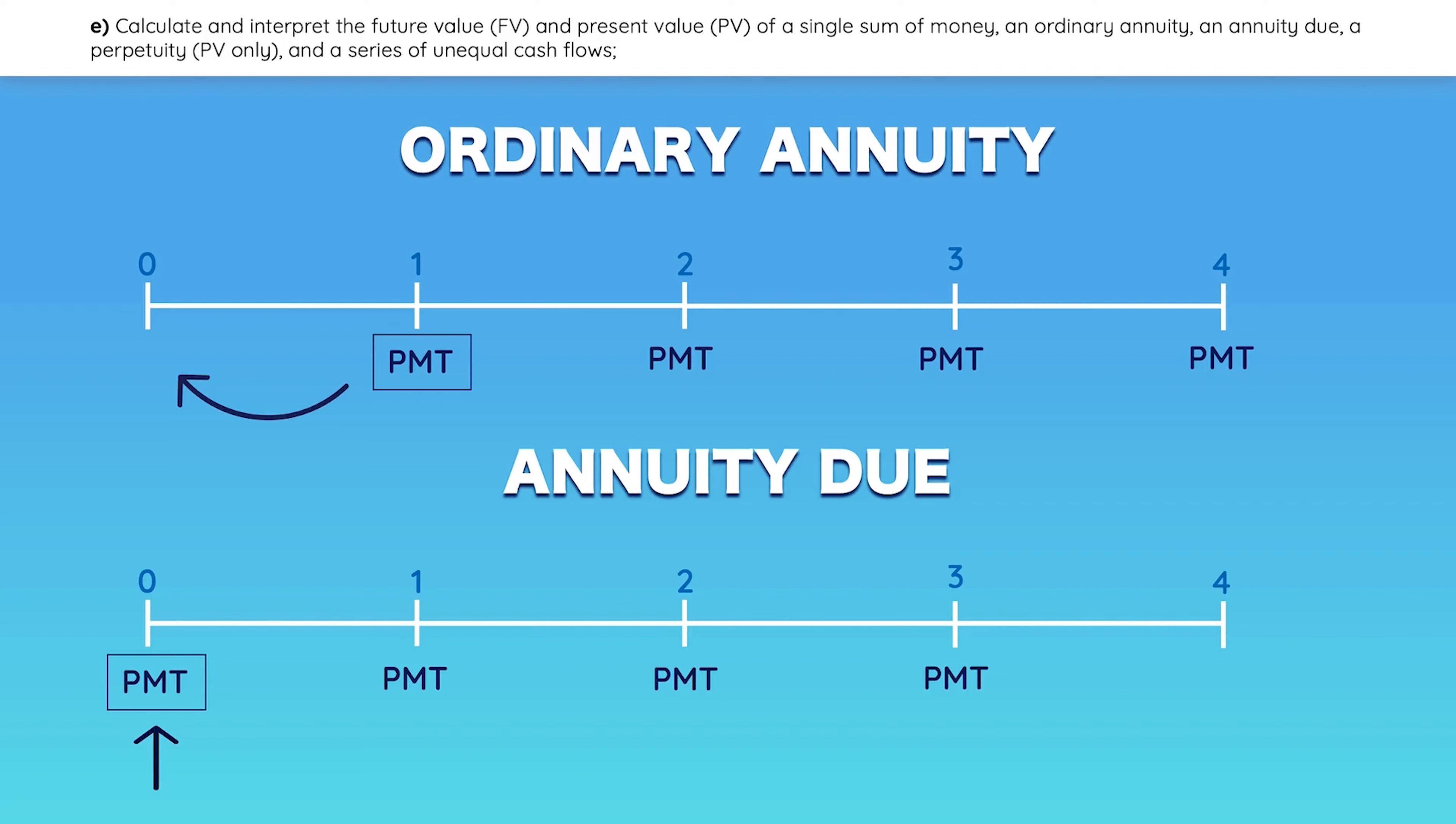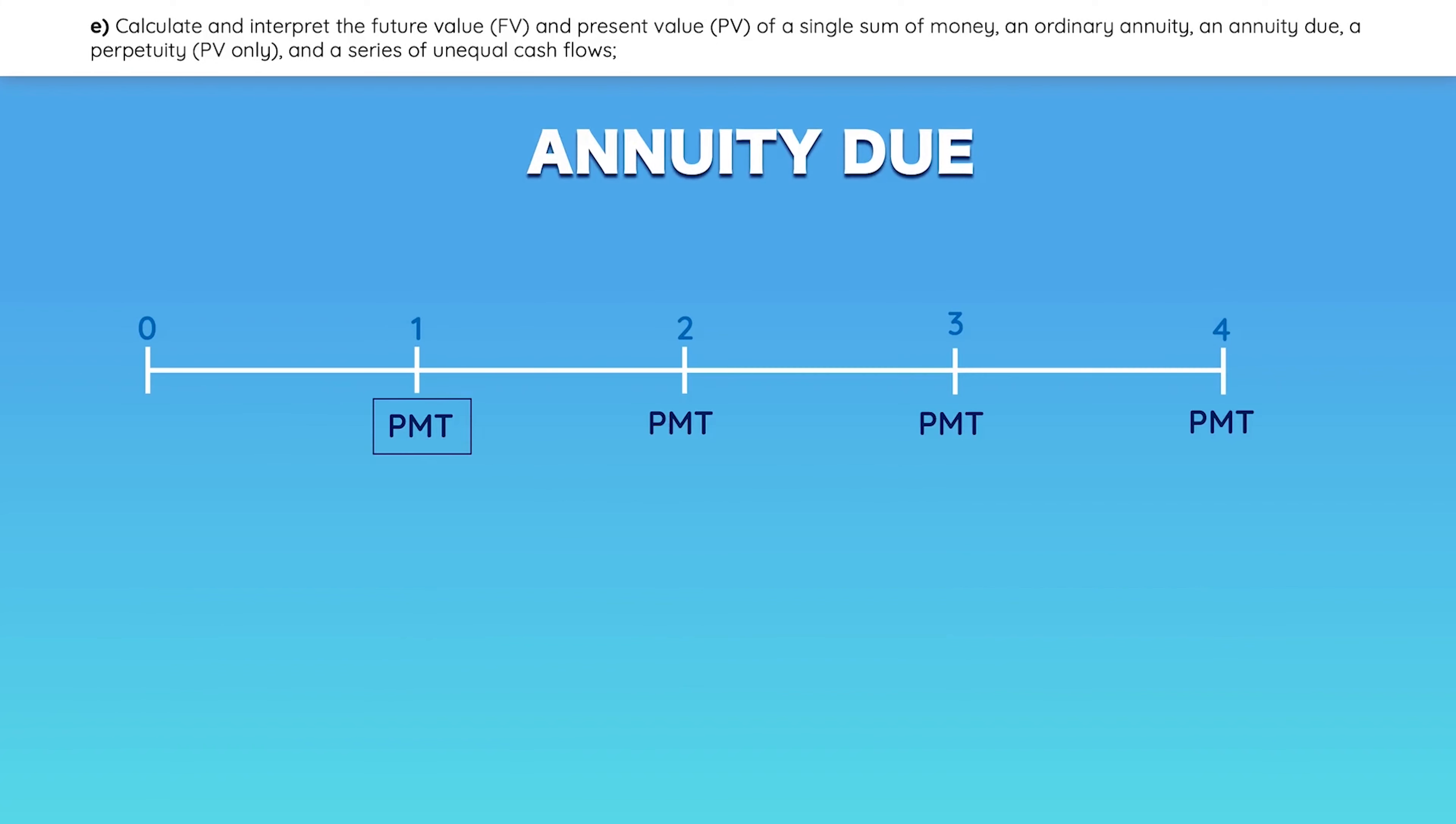So what can you do? Well, if you get a problem with an annuity due, you can use your calculator and solve for the present value as if it were a regular annuity. Then hop one year forward by multiplying the result by 1 plus R.